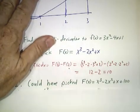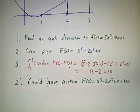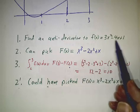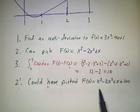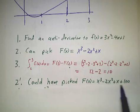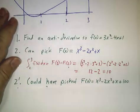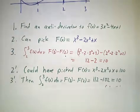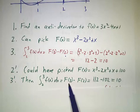What would have happened if we picked a different antiderivative? The derivative of x³ - 2x² + x is 3x² - 4x + 1, but the derivative of x³ - 2x² + x + 100 is also 3x² - 4x + 1.